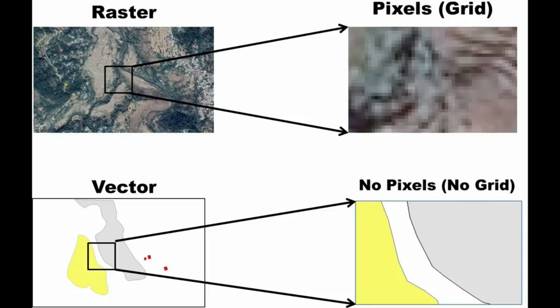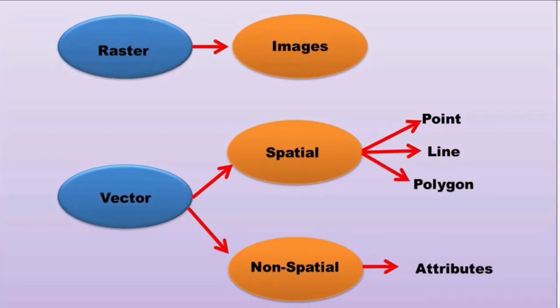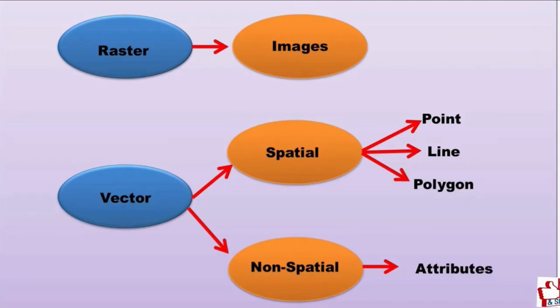Raster is the best representation of images — images captured from a mobile phone, scanned images, or satellite images. Any image is the best representation of raster data structure. The vector data structure, on the other hand, represents spatial as well as non-spatial data. Spatial data represents point, line, and polygon, whereas non-spatial data represents the attributes of spatial data structures.